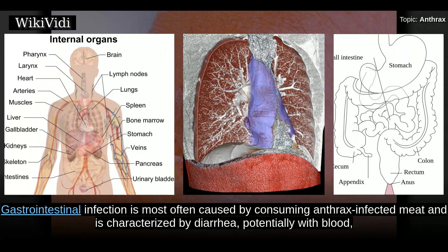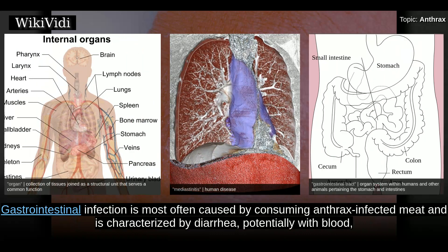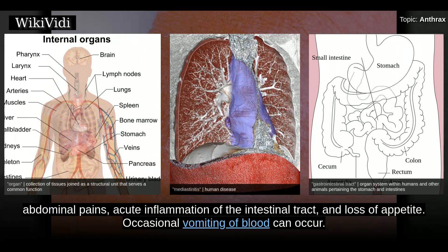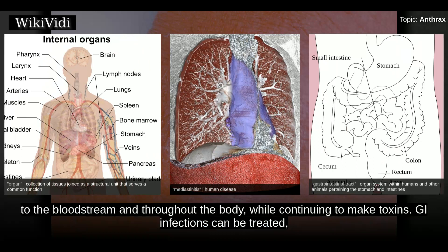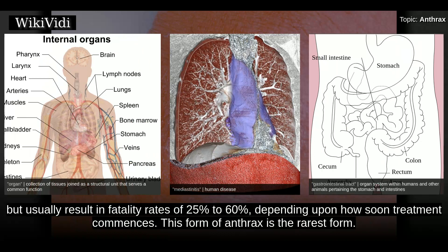Gastrointestinal infection is most often caused by consuming anthrax-infected meat and is characterized by diarrhea, potentially with blood, abdominal pains, acute inflammation of the intestinal tract, and loss of appetite. Occasional vomiting of blood can occur. Lesions have been found in the intestines and in the mouth and throat. After the bacterium invades the gastrointestinal system, it spreads to the bloodstream and throughout the body while continuing to make toxins. GI infections can be treated, but usually result in fatality rates of 25% to 60%, depending upon how soon treatment commences. This form of anthrax is the rarest form.